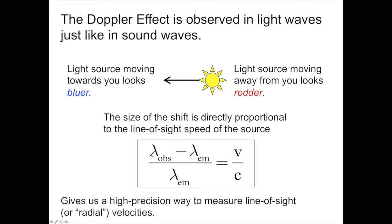Lambda is the symbol that physicists use to measure the wavelength of light. If I take the observed wavelength of light minus the emitted wavelength, and divide it by the emitted wavelength, so I'm now looking at the fractional shift, that's going to be equal to the speed of the source relative to c, the speed of light.